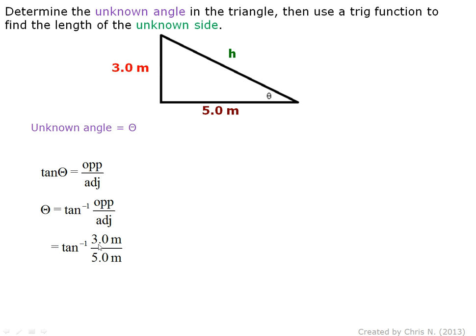Substitute the numbers in the equation, factor out the units, then plug it in the calculator. We will then get the answer of 30.9637 degrees, and in the correct significant figure it is 31 degrees.